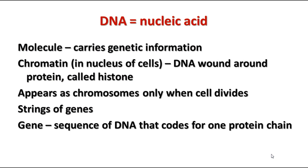DNA is a nucleic acid — deoxyribonucleic acid — named for the sugar found in it. It is a molecule that carries genetic information. In cells that are not dividing, DNA appears in the form of chromatin, wound around proteins called histones. You only see DNA in the form of chromosomes when the cell is dividing. DNA can also be described as a string of genes — a gene is a sequence of DNA that codes for a particular protein chain, so DNA is essentially a string of instructions to make various proteins in the cell.